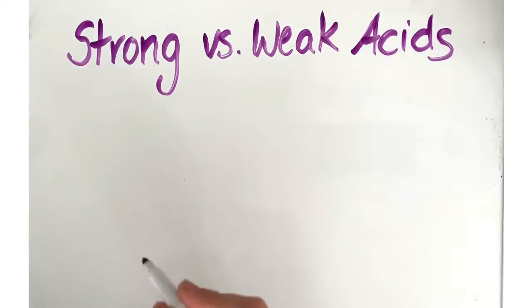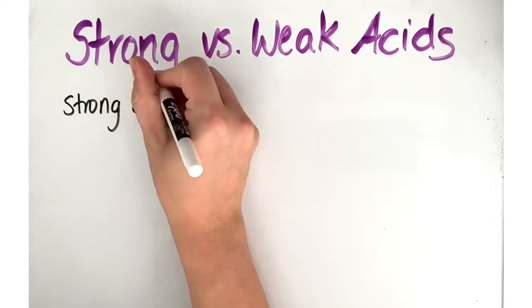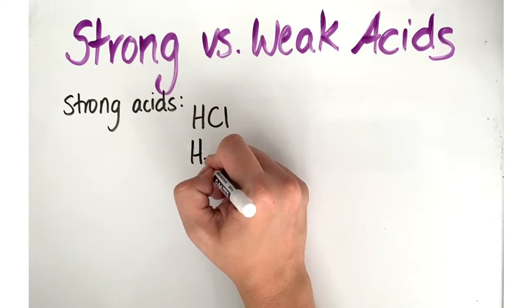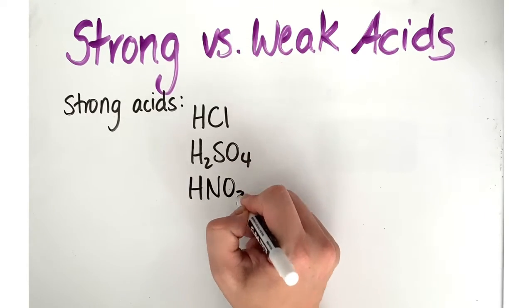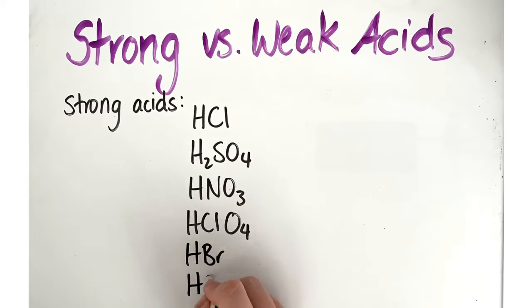And lastly, the other way we can identify them is trying to memorize which ones are strong acids. There are actually only six acids that are considered to be strong, and any other acid is considered to be a weak acid.